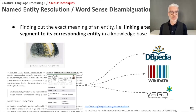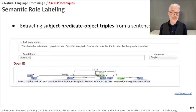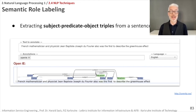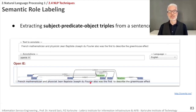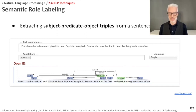Another technique is semantic role labeling, which goes one step further to find out the constituents of a sentence: what is the subject, what is the predicate, and what is the object. In our example, 'French mathematician and physicist Jean-Baptiste Joseph de Fourier' is identified as the subject. The relation 'was the first' connects to the object, 'describe' is again a relation, and 'the greenhouse effect' is the object. This is semantic role labeling.